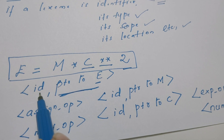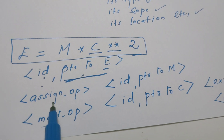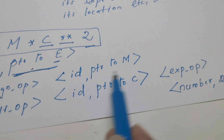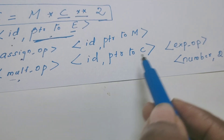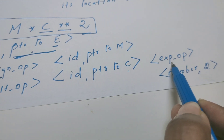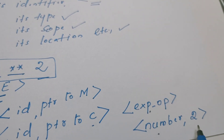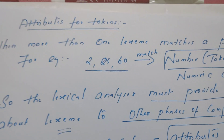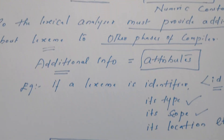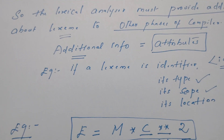To summarize: E is an identifier with a pointer to E; equal-to is an assignment operator; M is an identifier with a pointer to M; then a multiplication operator; identifier for C; an exponential operator; and finally a token for the number whose value is two. I hope you have got an idea about what is a token, pattern, and lexeme. Let's meet in the next video.